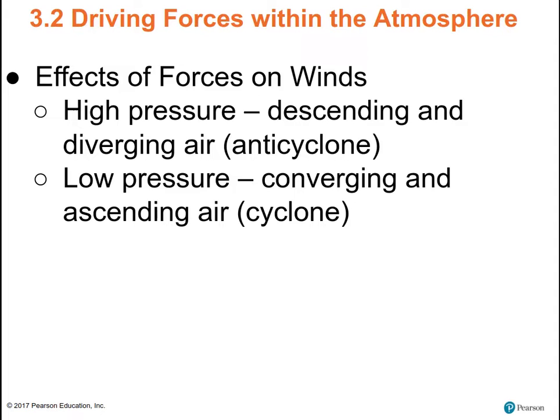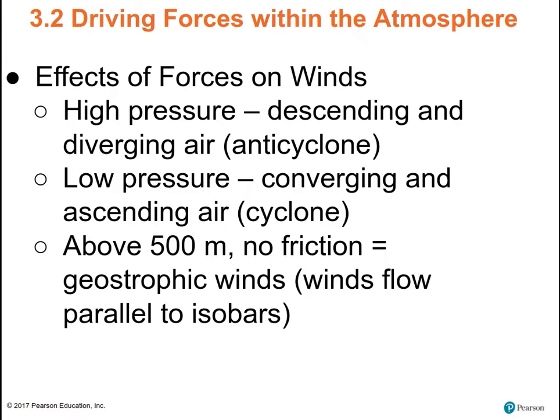Above 500 meters there's no friction, so the winds just flow parallel to the isobars — just under the influence of pressure gradient force. They start to flow from high to low, get deflected by Coriolis, head off to the right, and they never come back.